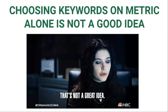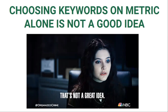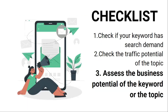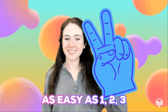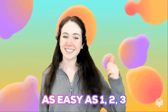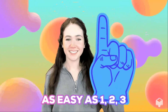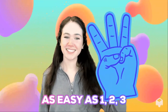Choosing keywords based on metrics alone is not a good idea, which is why the rest of the checkpoints are meant to ground rule. The next point on our checklist is to assess the business potential of the keyword or the topic. Business potential simply represents the value a keyword has to your business, and value really comes down to your niche as well as your business model. An easy way to do this is by assigning scores between 1 to 3 to keywords you are researching. The higher the number, the more important the topic is for your business.